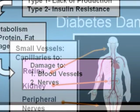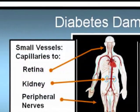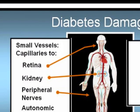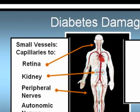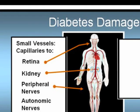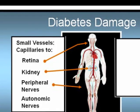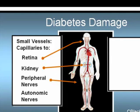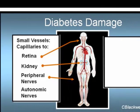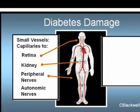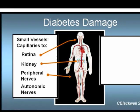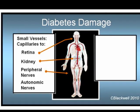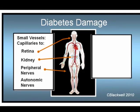Blood vessel damage comes in two varieties. First, damage to the capillaries — the small vessels that deliver oxygen and nutrients to the tissues. These are the microvascular complications, with damage to the retina, the kidneys, and peripheral nerves. Regarding the retina, diabetes is the leading cause of blindness between ages 20 and 70.